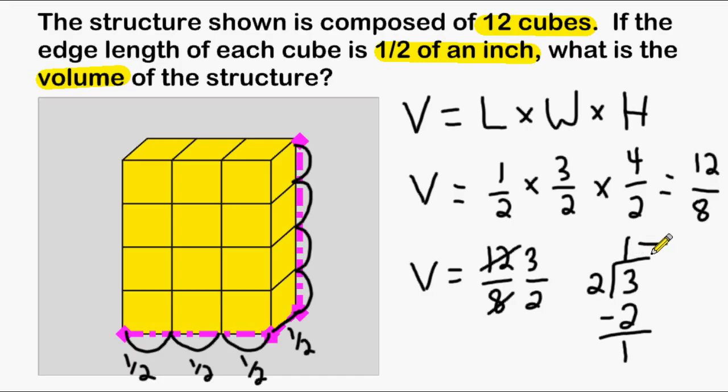Write a fraction bar right next to your whole number at the top, and your remainder will always be your numerator, and your divisor will always make your denominator. So we can say that the volume of this rectangular prism is equal to one and one half cubic inches.